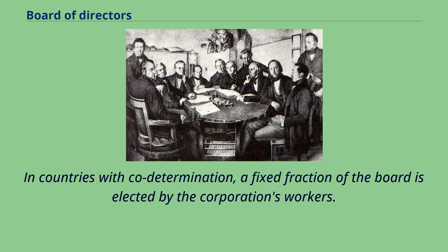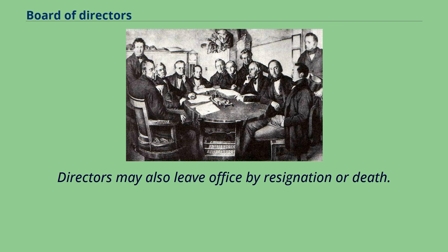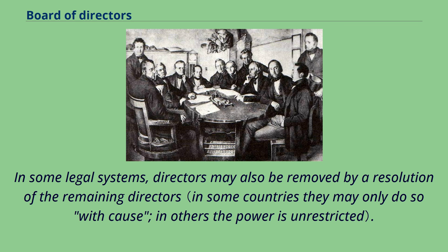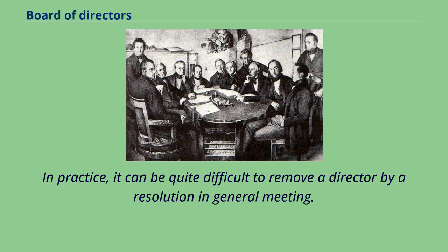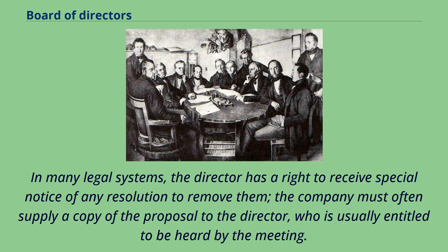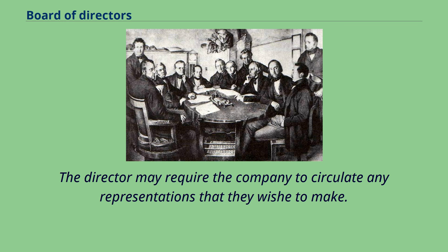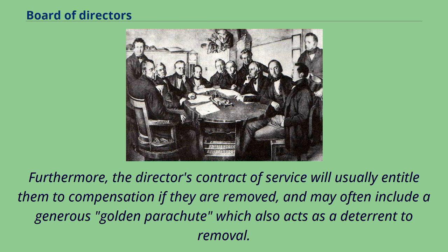In countries with co-determination, a fixed fraction of the board is elected by the corporation's workers. Directors may also leave office by resignation or death. In some legal systems, directors may also be removed by a resolution of the remaining directors. Some jurisdictions also permit the board of directors to appoint directors, either to fill a vacancy or as an addition to the existing directors. In practice, it can be quite difficult to remove a director by a resolution in general meeting. In many legal systems, the director has a right to receive special notice of any resolution to remove them, and may require the company to circulate any representations they wish to make. Furthermore, the director's contract of service will usually entitle them to compensation if they are removed, and may often include a generous golden parachute, which also acts as a deterrent to removal.